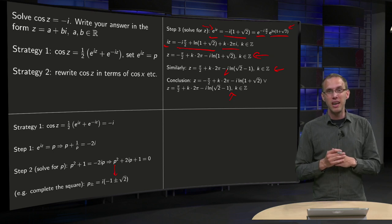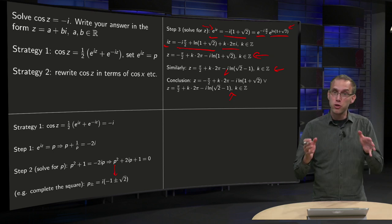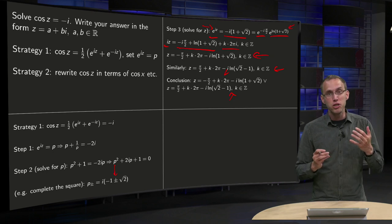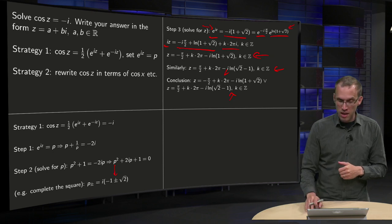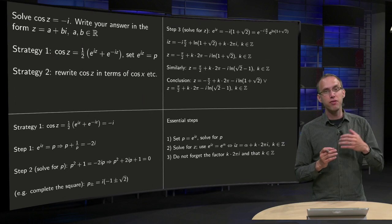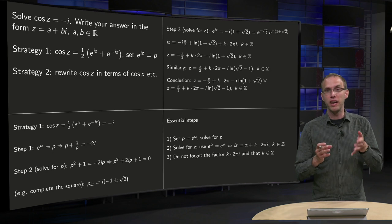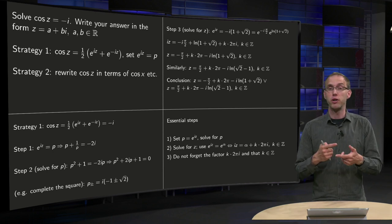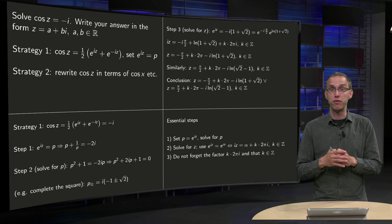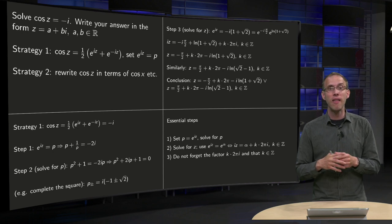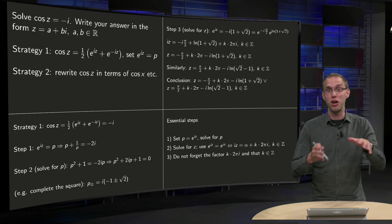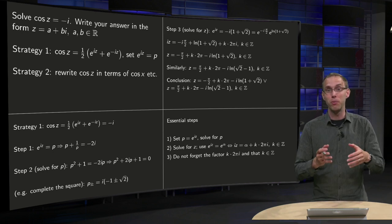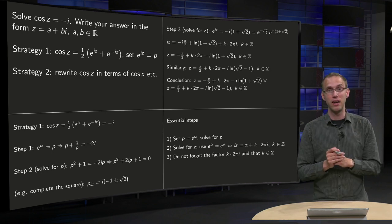Suppose you left out the factor 2πi — how many solutions would you have gotten? Well, if you forgot the 2πi, you would have gotten either one or two solutions. But right at the start of the exercise, you should have answered that you would obtain an infinite number of solutions.